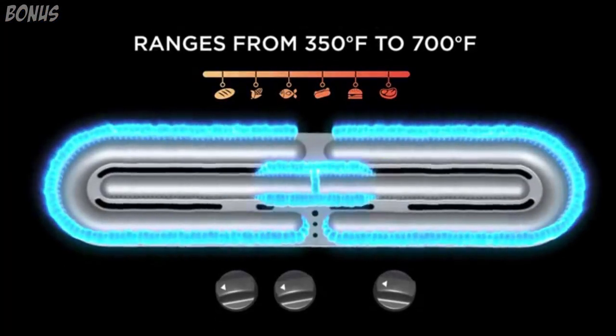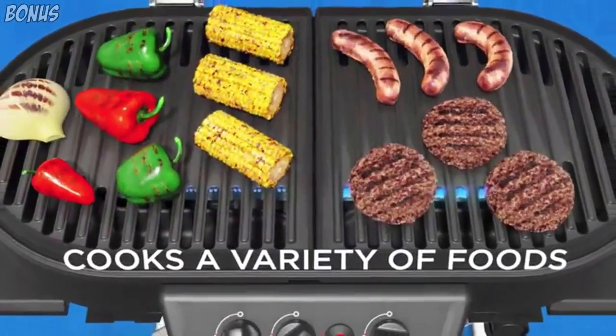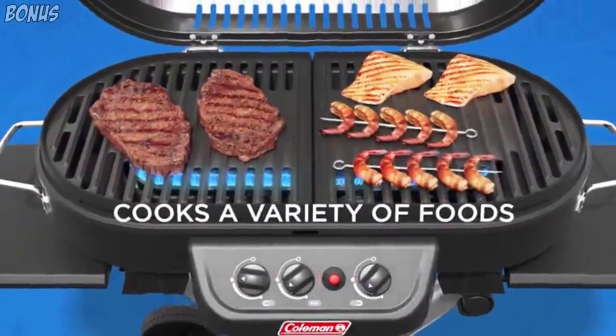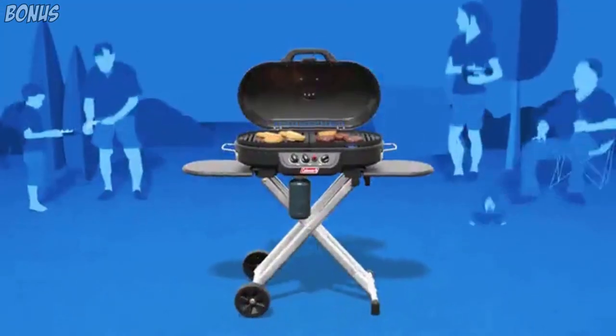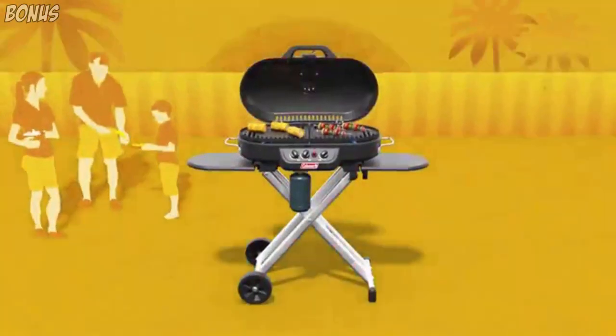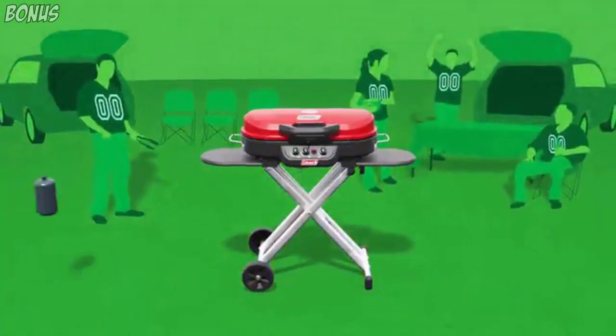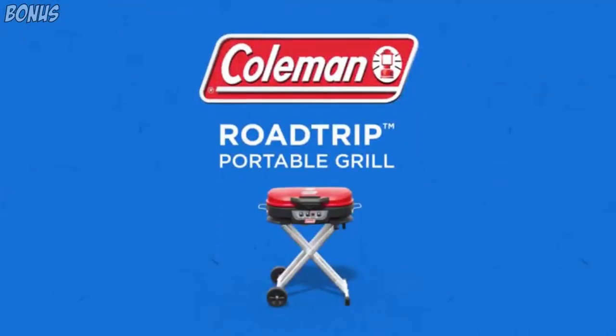Coleman's innovative technology offers three independent burners ranging from 350 to 700 degrees Fahrenheit. You can cook low and slow, or hot and fast, giving you the freedom to grill everything. Perfect for campground cookouts, backyard barbecues, and game day tailgates. The Coleman Road Trip Portable Grill.